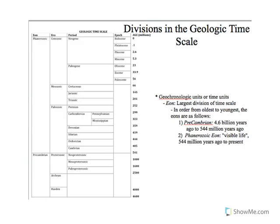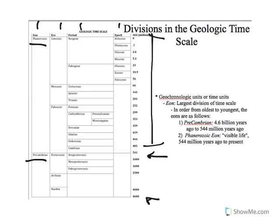Let's take a look at the time scale. There are different divisions: we have eons, eras, periods, and epochs. We have two different eons — the Precambrian and the Phanerozoic — which span the longest parts of time. Notice that this geologic time scale is not to scale. The Precambrian starts at 4.6 billion years ago and ends at about 544 million years ago, so it is much, much larger and longer than the Phanerozoic, which is only 544 million years long.